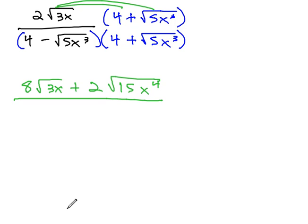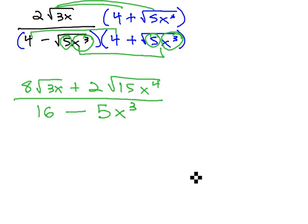All over, and again because they're conjugates, we only have to multiply the first and last together. 4 times 4 is 16, positive times a negative is a negative. We've got two 5's under the radical, so a 5 comes out. We've got x cubed there twice, so an x cubed can come out.